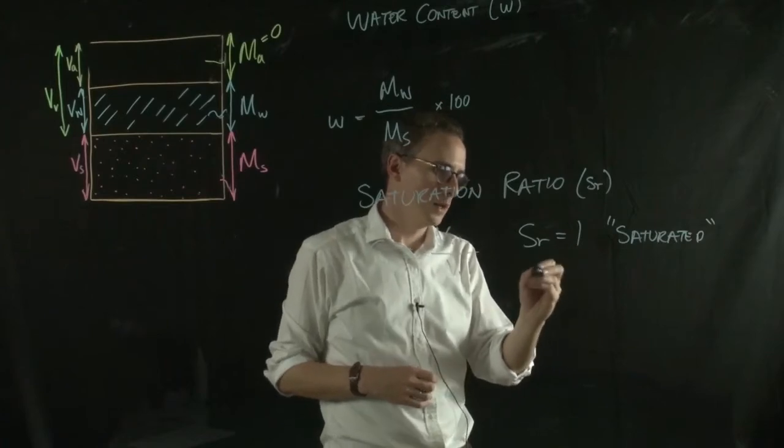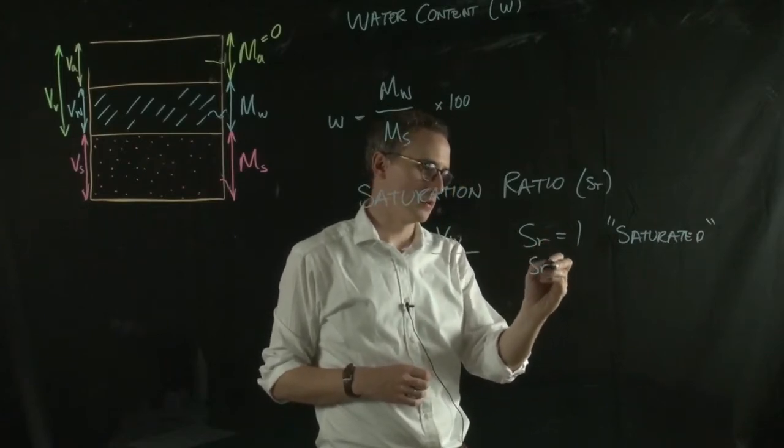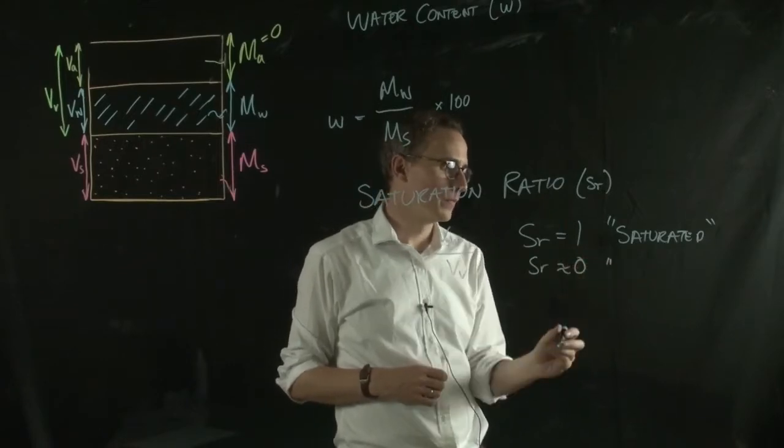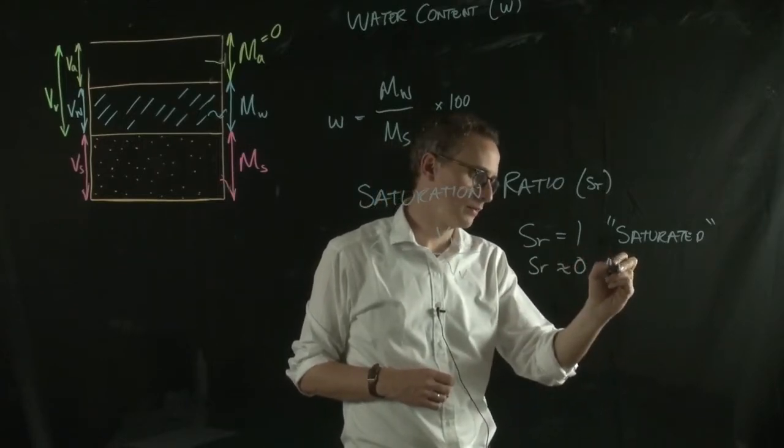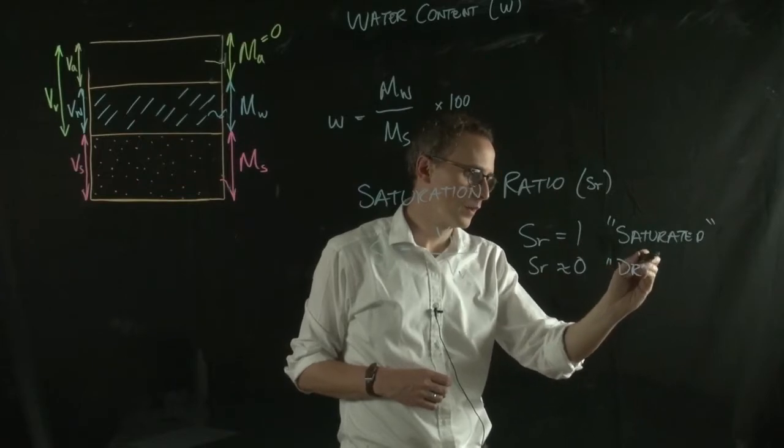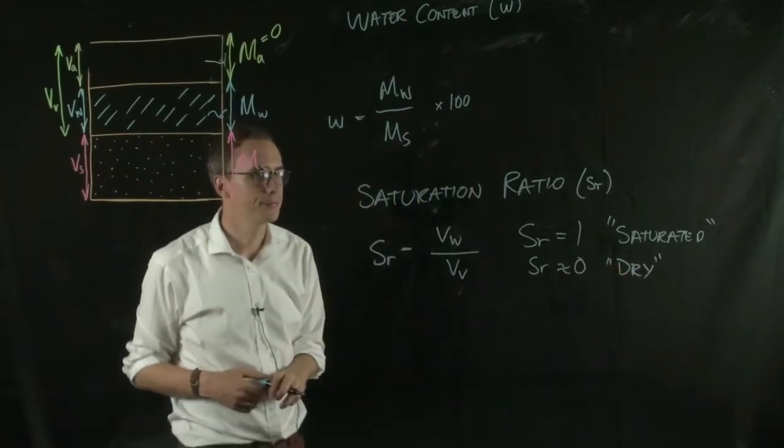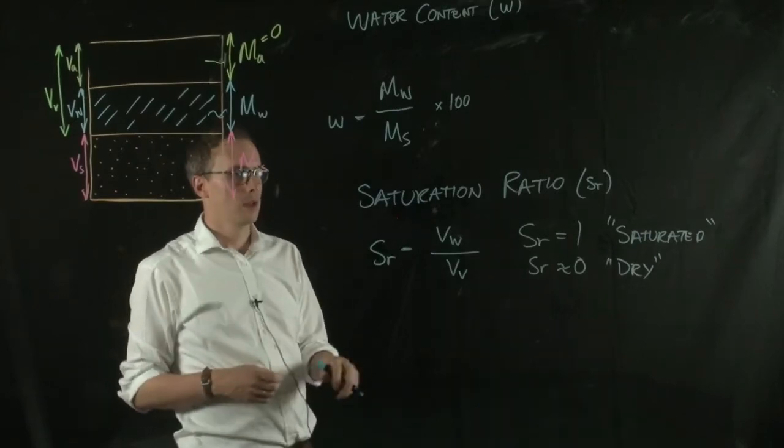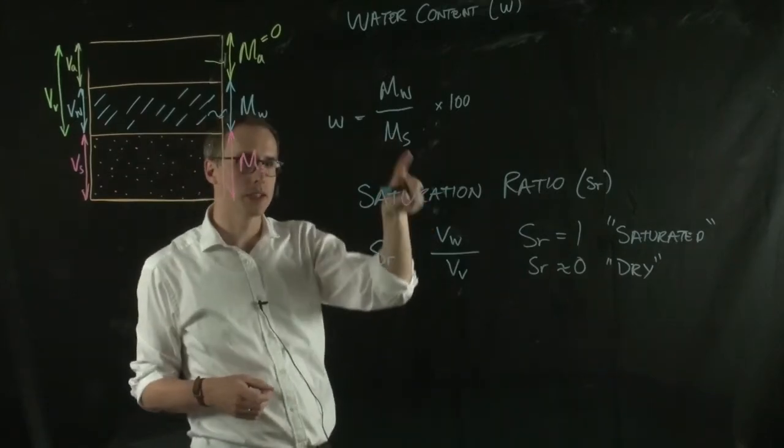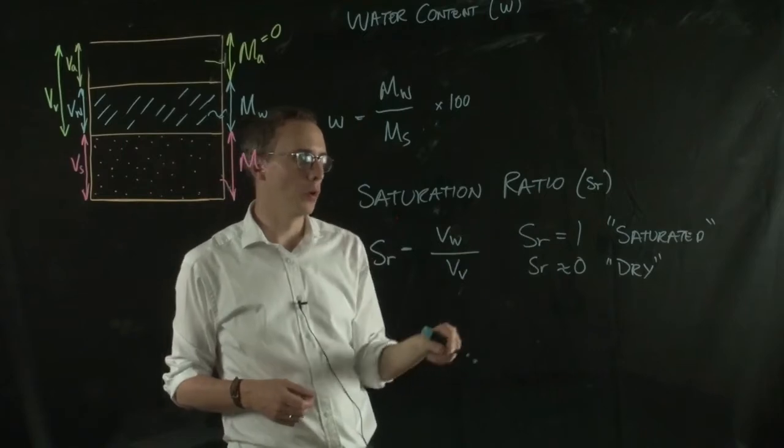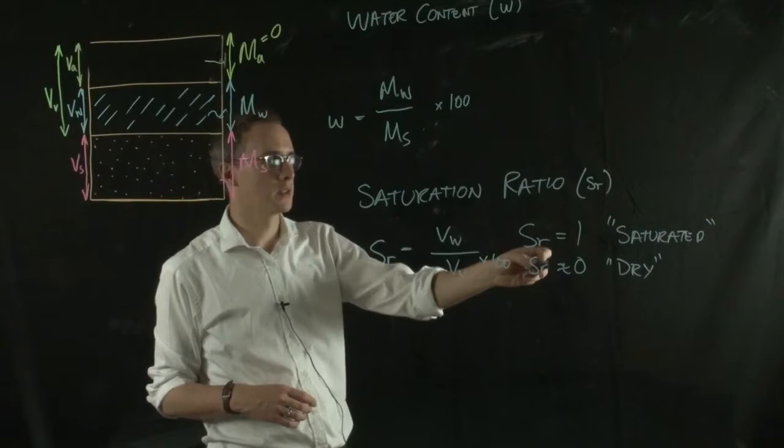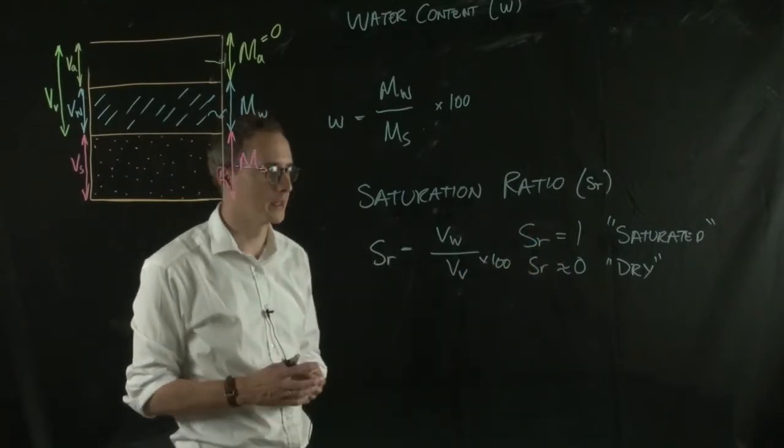And the inverse is true, Sr is closer to 0, it's dry, you have a dry soil. And again, this is sometimes expressed as a ratio between 0 and 1, or as a percentage, so you can just multiply that by 100, and you get Sr between 0 and 100%.